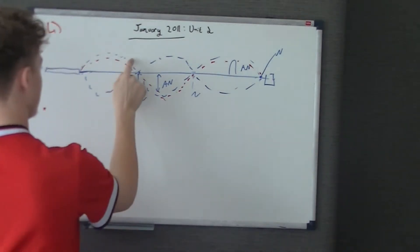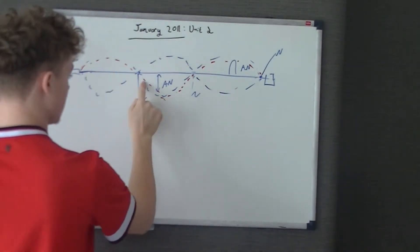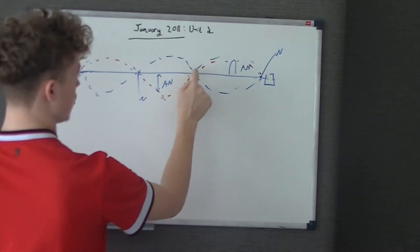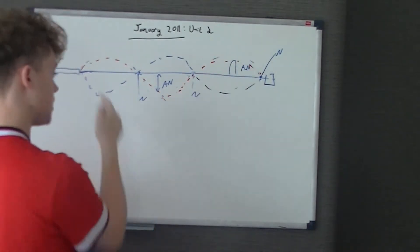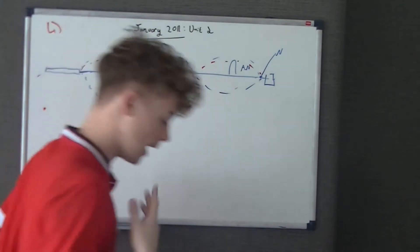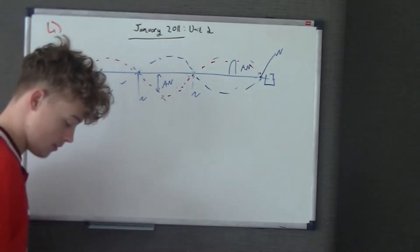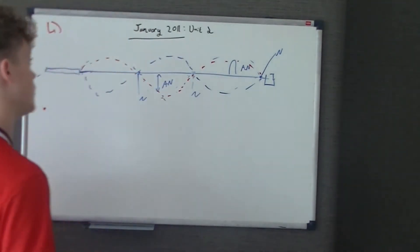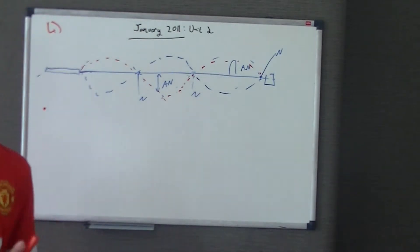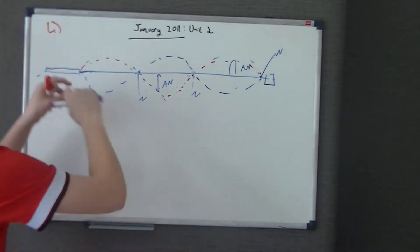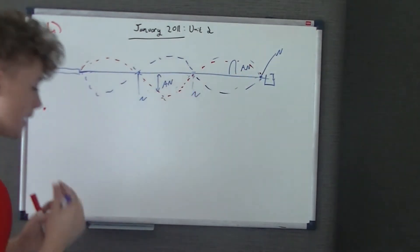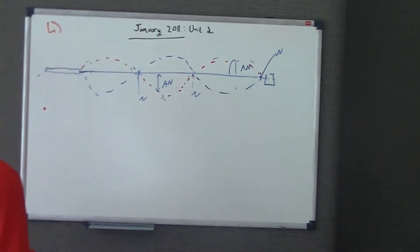So this red one here is a different one to the blue one that's going up and down. They are two different transverse waves. And now we know they're transverse, because they have to be progressive waves, which are waves that transfer energy from one place to the other, to form a stationary wave. And it says, how is a stationary wave formed?